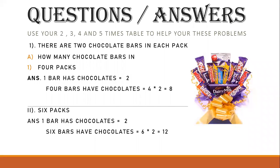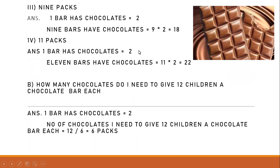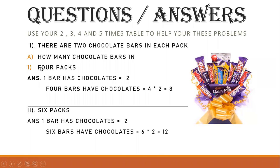If you have four packets, how many chocolate bars will you have? There are two chocolate bars in each pack, so if you have four packs, just multiply four by two. Four times two is eight. So if you have four packs, you will have eight chocolate bars.